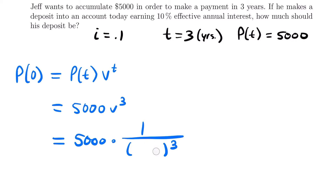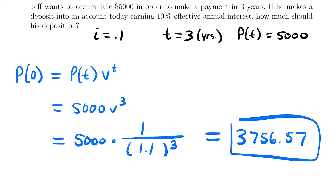We can simplify 1 plus 0.1 to be 1.1, so this becomes 5,000 times 1 divided by 1.1 cubed, which equals $3,756.57. This means that if Jeff deposits this amount today, he would have $5,000 in three years given this particular compound interest rate.